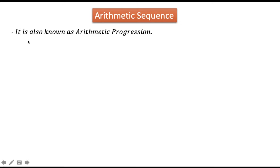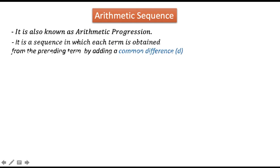An arithmetic sequence is also known as an arithmetic progression. It is a sequence in which each term is obtained from the preceding term by adding a common difference. Common difference is commonly represented by the variable d.